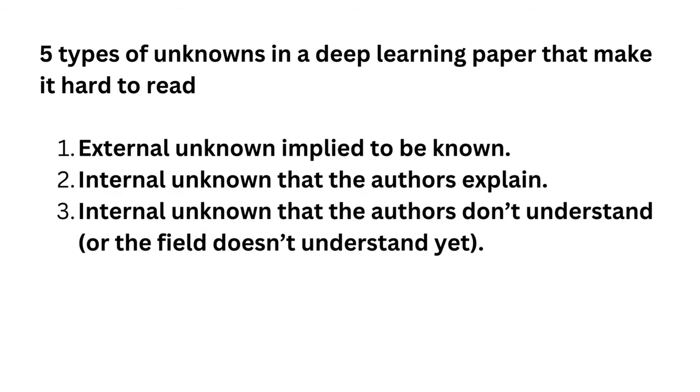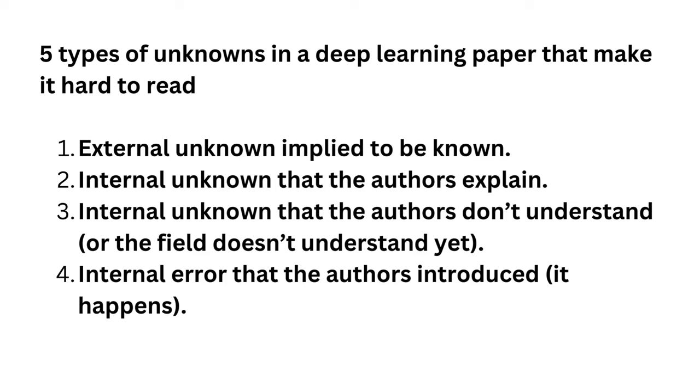The third type of unknowns are elements that the author didn't understand fully, so they kind of waved it away. This type of unknown is usually very hard to get an answer for and is a core target for criticism in later years following publication. The fourth type is surprisingly stuff that the authors got wrong. It does happen. It doesn't mean the paper is garbage though, sometimes things work out anyway.